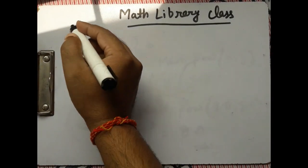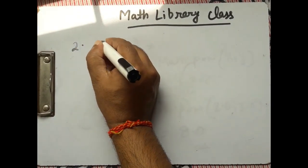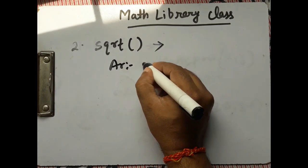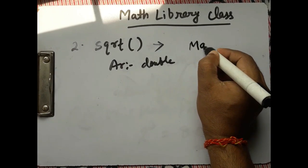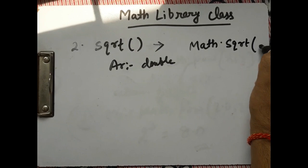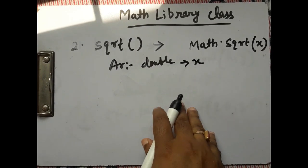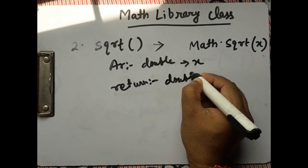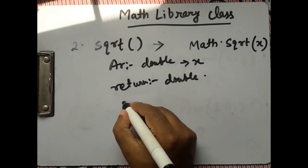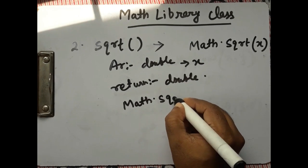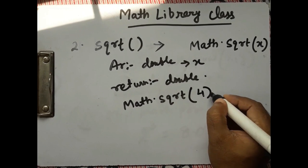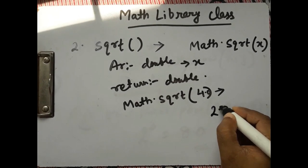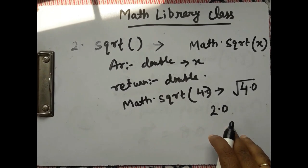The second function is square root, Math.sqrt(). The argument is a double value, and it also returns a double value. For example, Math.sqrt(4.0) will return 2.0, meaning the square root of 4.0 is 2.0.